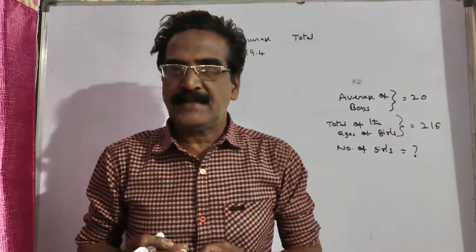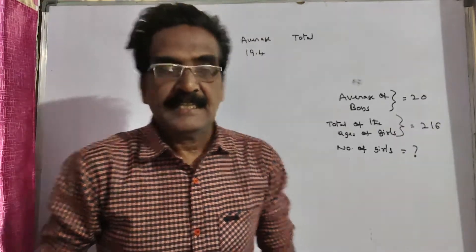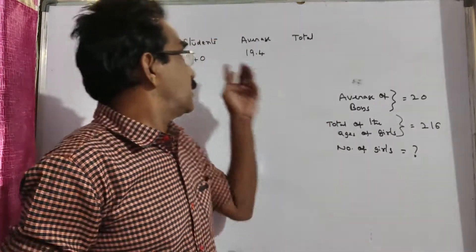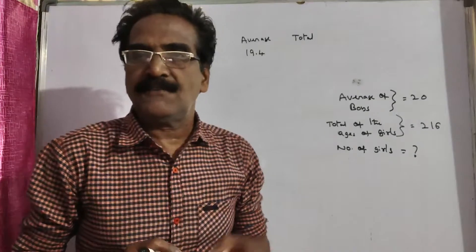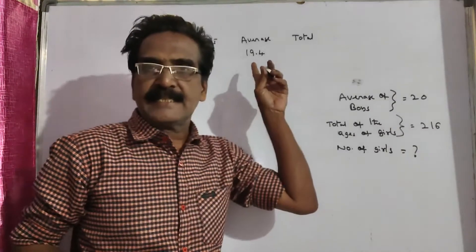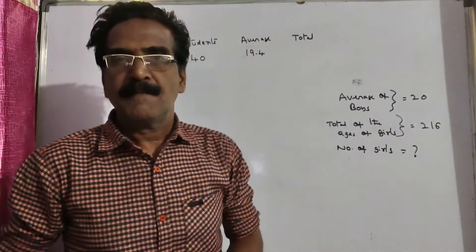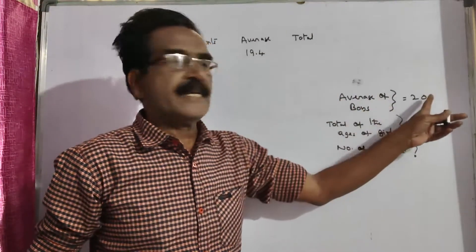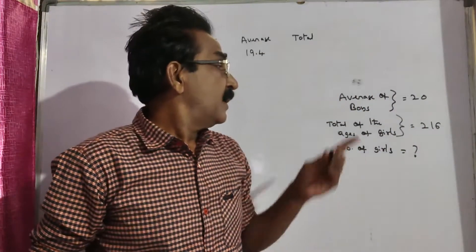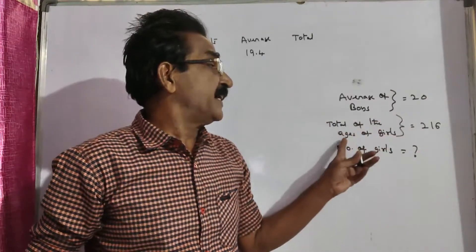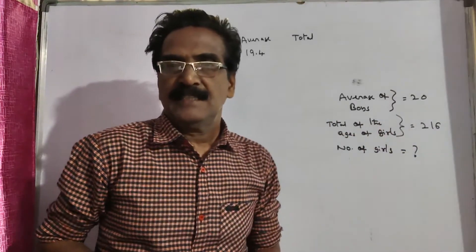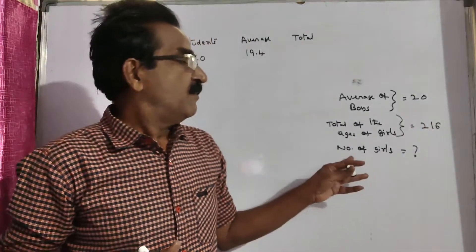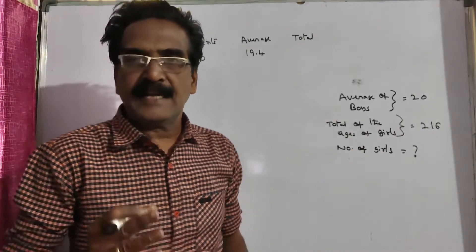Hi friends, good morning. Please look at the next problem in average. Friends, the average age of 40 students is 19.4. The average age of boys is 20. And the total of the ages of girls is 216. Find the number of girls.